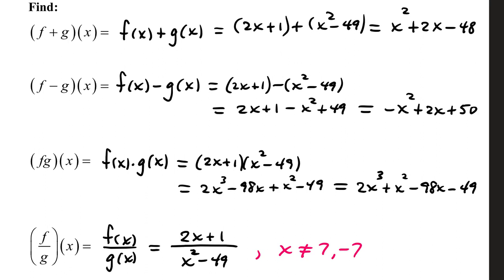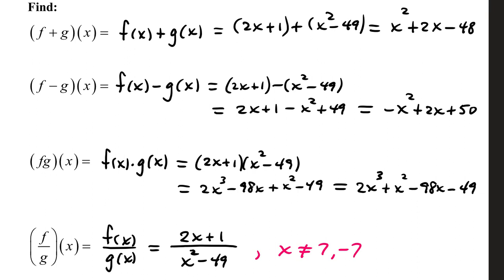The product of these two functions: f times g of x, 2x plus 1 times x squared minus 49. Start with 2x, distribute it. That's 2x cubed minus 98x. Then move over to plus 1, distribute it.